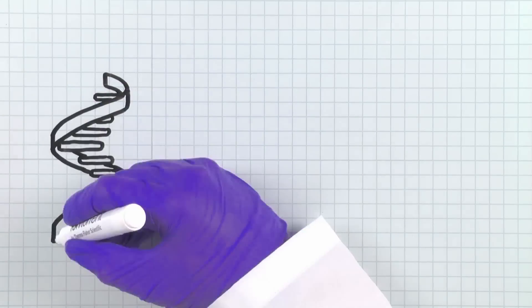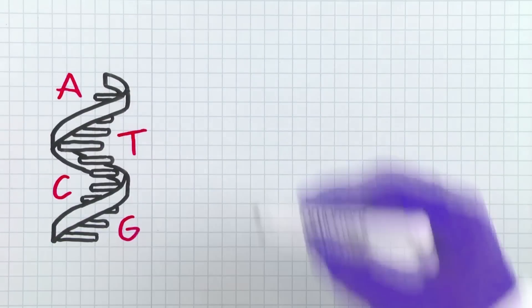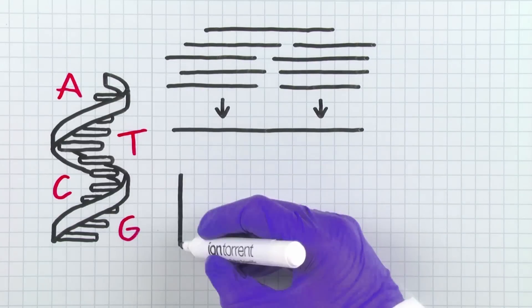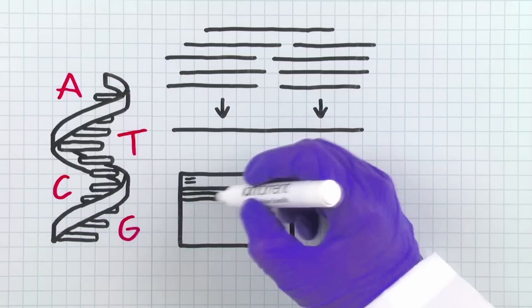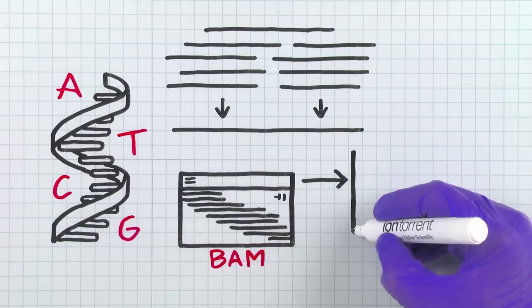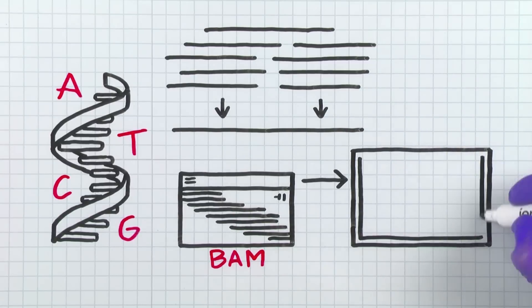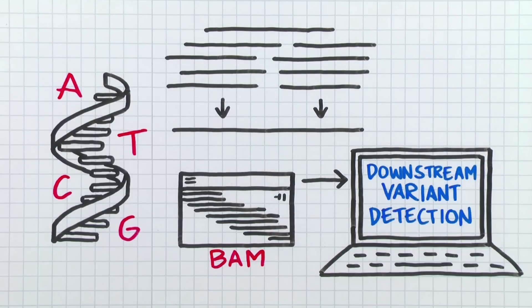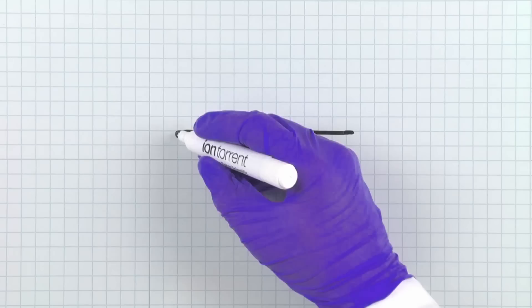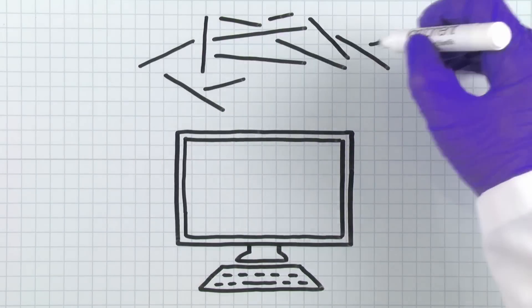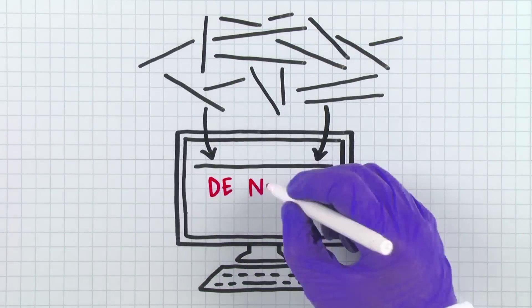Now let's take a look at our lab book. NGS can produce a bunch of A, T, Cs, and Gs, but how do we make sense of it all? The collection of sequencing reads can be aligned to a reference genome, generating a Binary Alignment Mapping file, or BAM file. This standard file is the input for many NGS software tools and can be used for a variety of applications, including downstream variant detection. No reference genome? No problem. The collection of reads can also be used by specialized NGS software for building a reference genome, called De Novo Assembly.